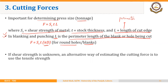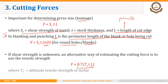When shear strength is unknown, an alternative way of estimating the cutting force is to use tensile strength. The formula then becomes 0.7 × tensile strength × thickness × length of cut edge. This will give approximately the same result as the original formula.